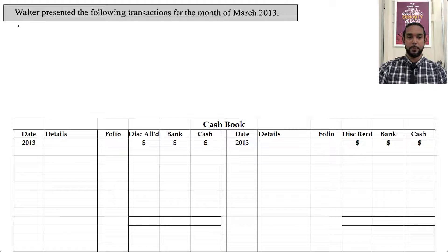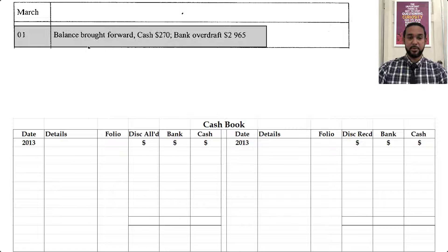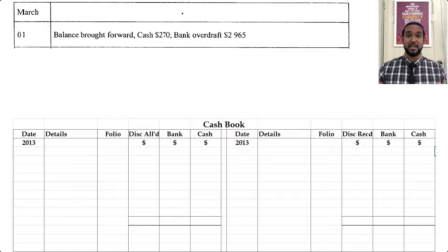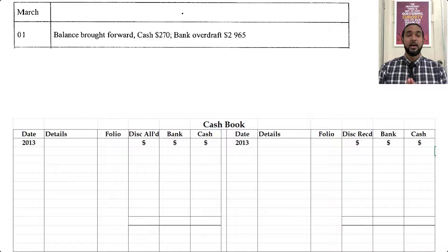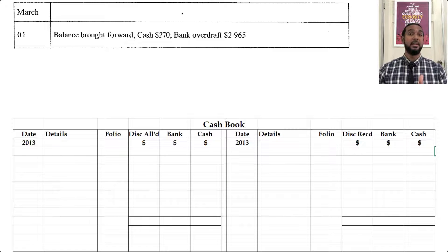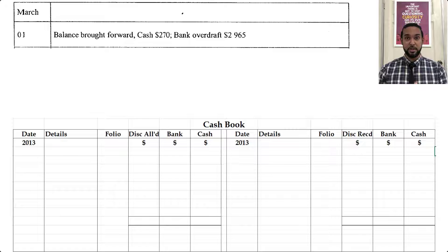So we have a cash book question and as per usual we're going to take a read of the information. Walter presented the following transactions for the month of March 2013, and they want us to fill out the three column cash book. On the first of March we have the balances brought forward: cash 270 and bank overdraft 2,965. Cash and bank are usually classified as assets and assets have debit balances at start. The exception is the bank overdraft — an overdraft arises when you spend more money than you have in the bank account, and the bank essentially lends you money to spend. When the bank lends you money, you owe them money, and anytime you owe money that's classified as a liability, which will have a credit balance at start.